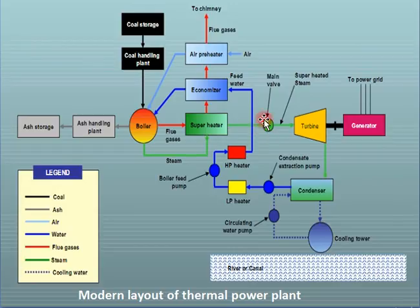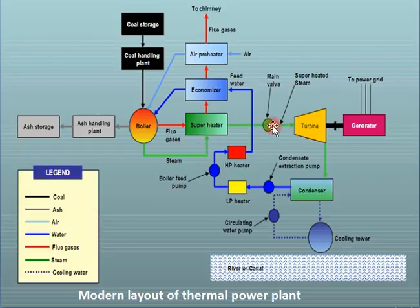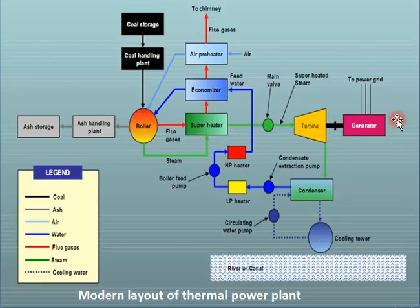Then the steam passes through the main valve and comes to the turbine. The turbine is the main part where the steam expands. The steam coming out from the boiler expands and strikes on the blades. The blades are mounted on the shaft, so when the blades rotate, the shaft rotates, and the shaft is directly connected with the generator or alternator. This is where electricity is produced.